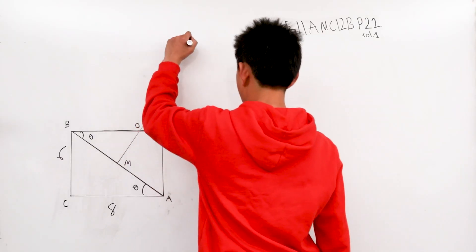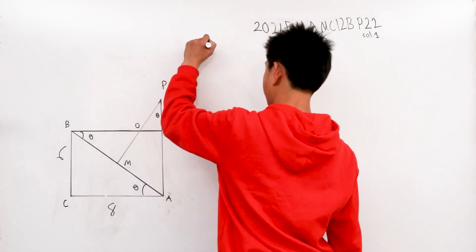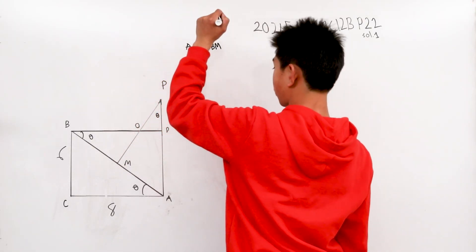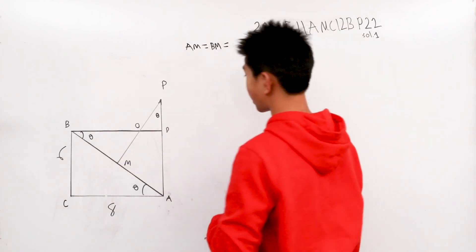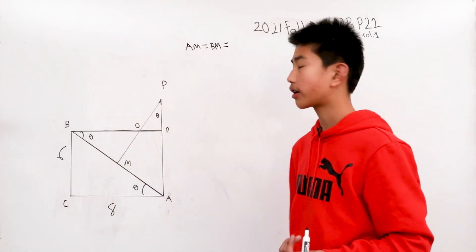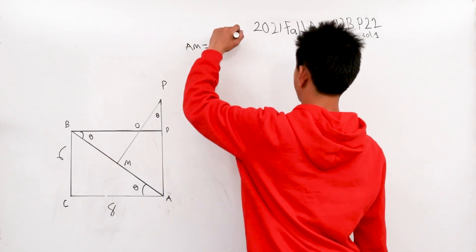We then know that AM equals BM because the midpoint is equal to one half of the total diagonal length. Since the diagonal length is 10, 10 divided by 2 is 5.